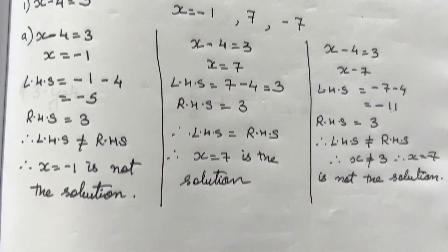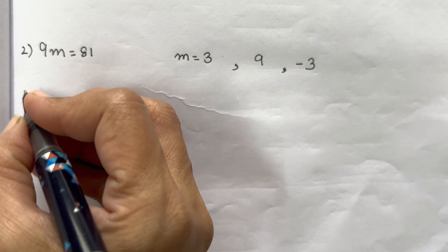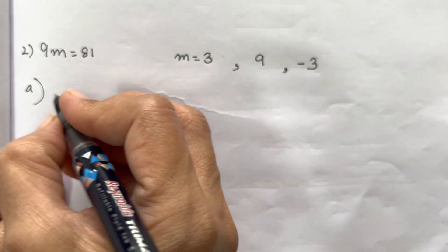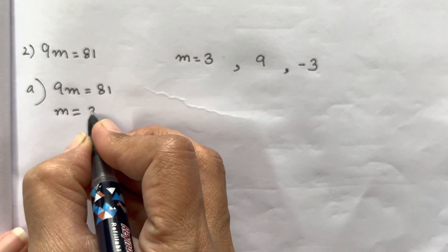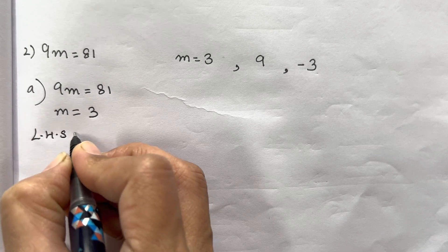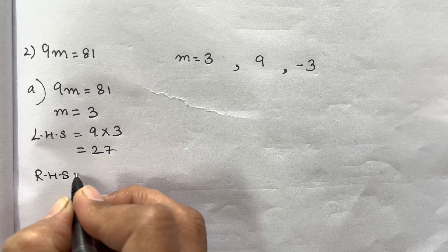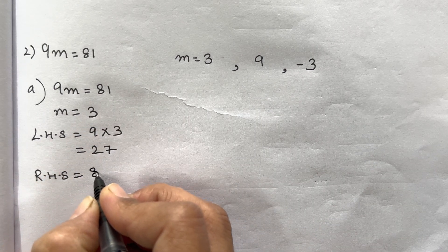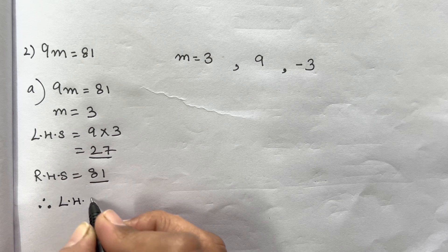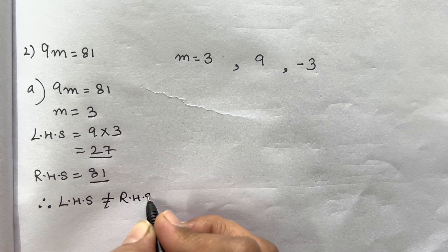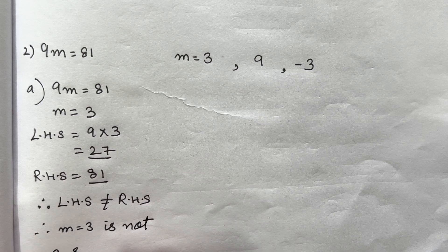Now let's move on to the next question. Same kind of equation with three substitutions given. The equation is 9m = 81. First we take m = 3. Left Hand Side is 9 × 3 = 27, and Right Hand Side is supposed to be 81. Since 27 and 81 are quite different, Left Hand Side is not equal to Right Hand Side, therefore m = 3 is not a solution.